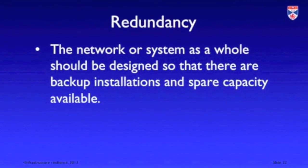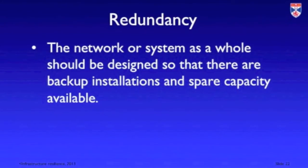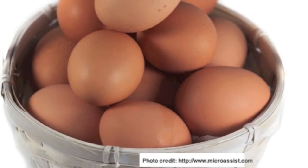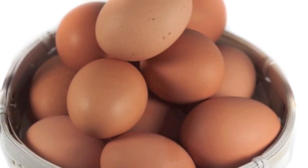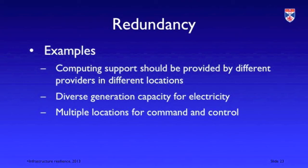Redundancy is about ensuring there is spare capacity in the network. It's the old saying: don't put all your eggs in one basket. It's about distributing capability across your infrastructure network so that you have more than one way to do things, and in the event of failure you can maintain service — perhaps at a degraded level — because you have spare capacity. In cloud computing, for example, you ensure you have backup clouds in different data centers.